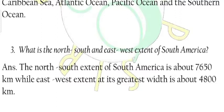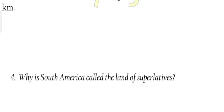Question 3: What is the north-south and east-west extent of South America? Answer: The north-south extent of South America is about 7,650 kilometers, while the east-west extent at its greatest width is about 4,800 kilometers.